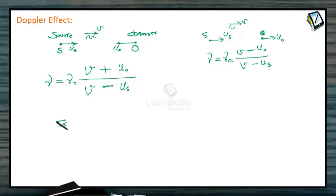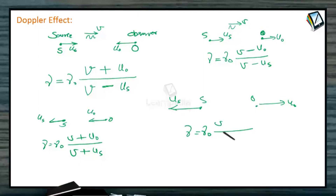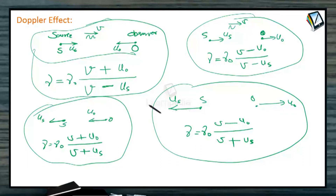If source is moving away with speed us and observer is moving towards source with speed u0, then ν equals ν0 times v in numerator over v in denominator, with observer's motion in numerator and source's motion in denominator. Source moving away decreases frequency, so it should be plus in the denominator. Observer moving towards source increases frequency, so it should be plus in the numerator. For the fourth case, both moving away from each other means both motions decrease apparent frequency: negative in the numerator and positive in the denominator. These are the four possible cases of relative motion between source and observer.